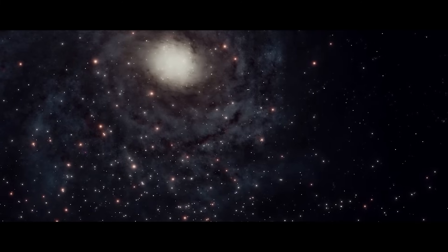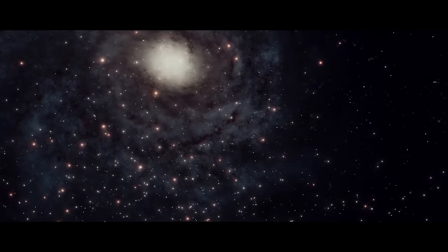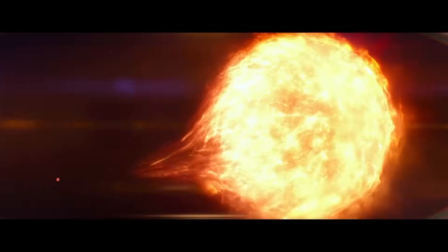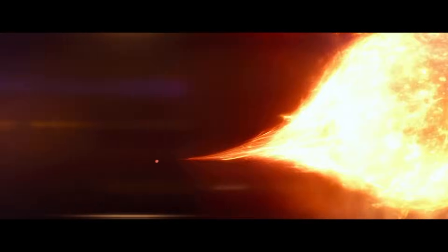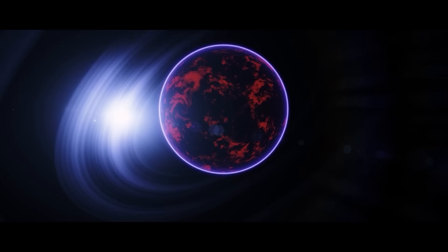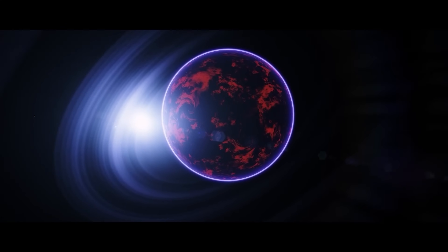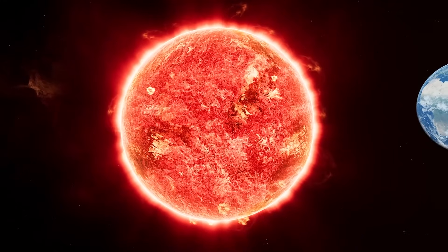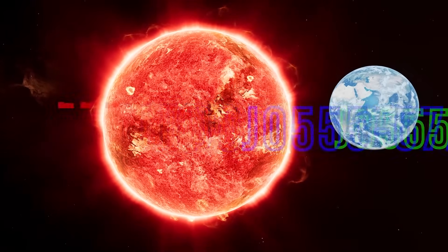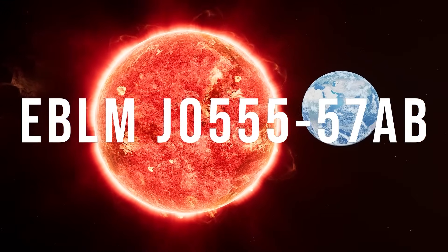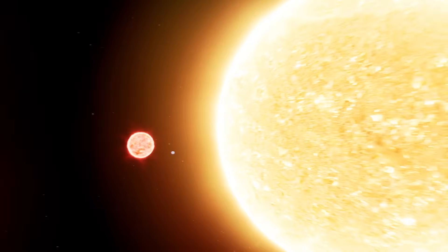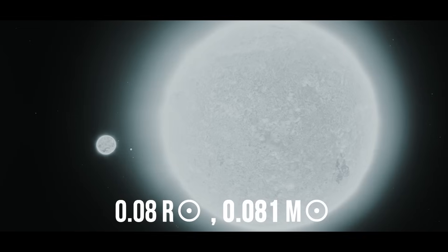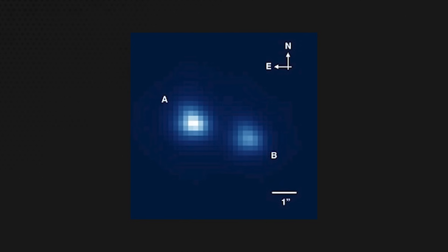But just like the Guinness World Records, where next to the heaviest weight ever lifted by a human you'll also find a record for the longest walk on Lego bricks ever completed, the universe has its own weird champions and underachievers too. If you thought that colossal stars with radii thousands of times larger than the Sun's are the most mind-blowing things in space, think again. In fact, being the smallest in the universe is a far greater challenge. But this star, with an extraordinarily long name, EBLM J0555-57Ab, seems to pull it off.